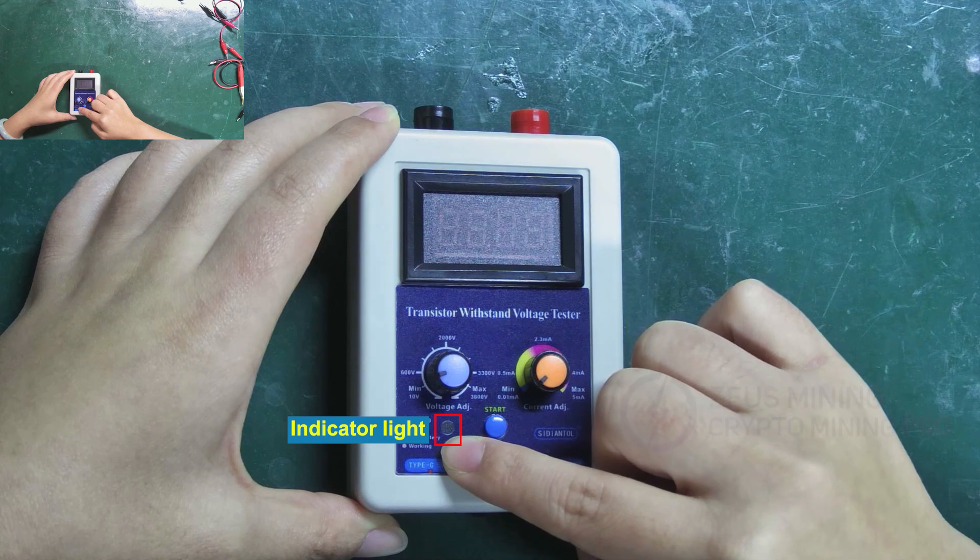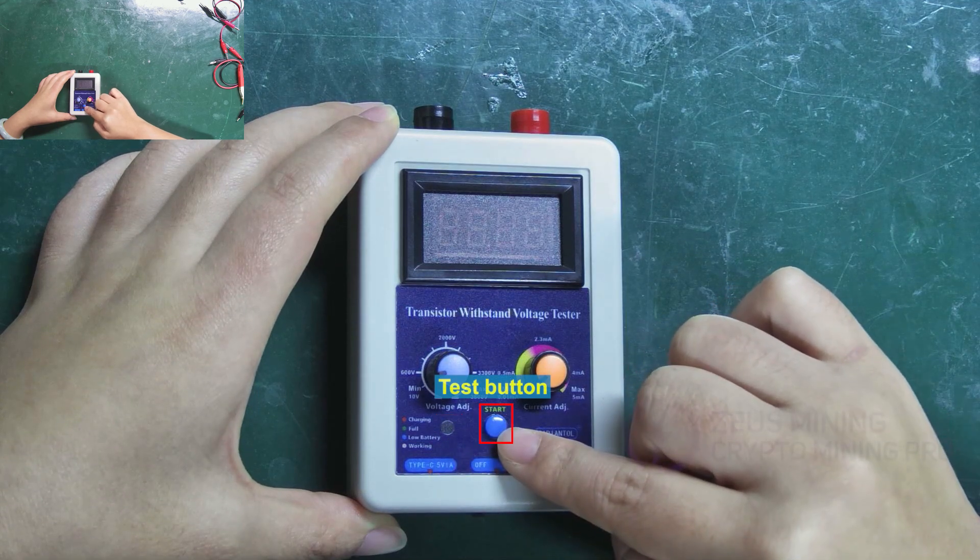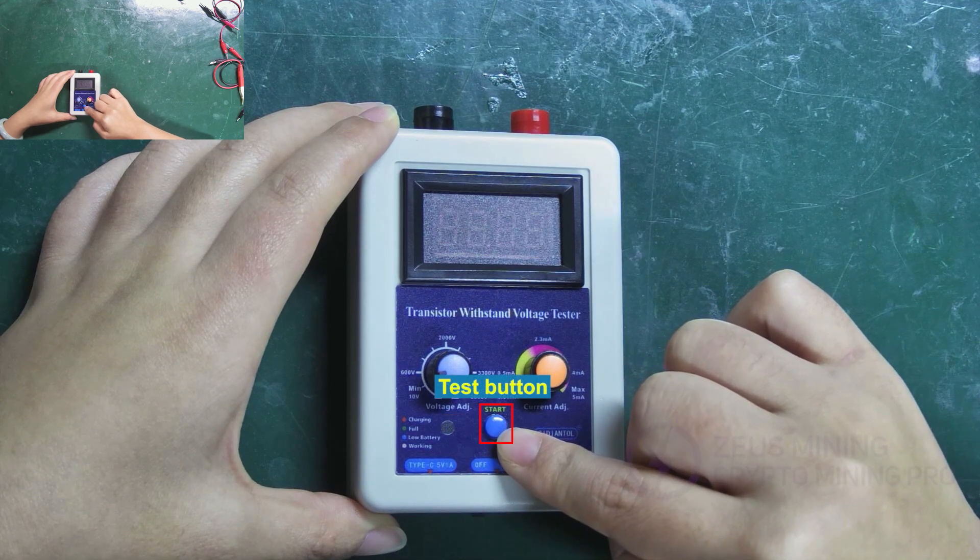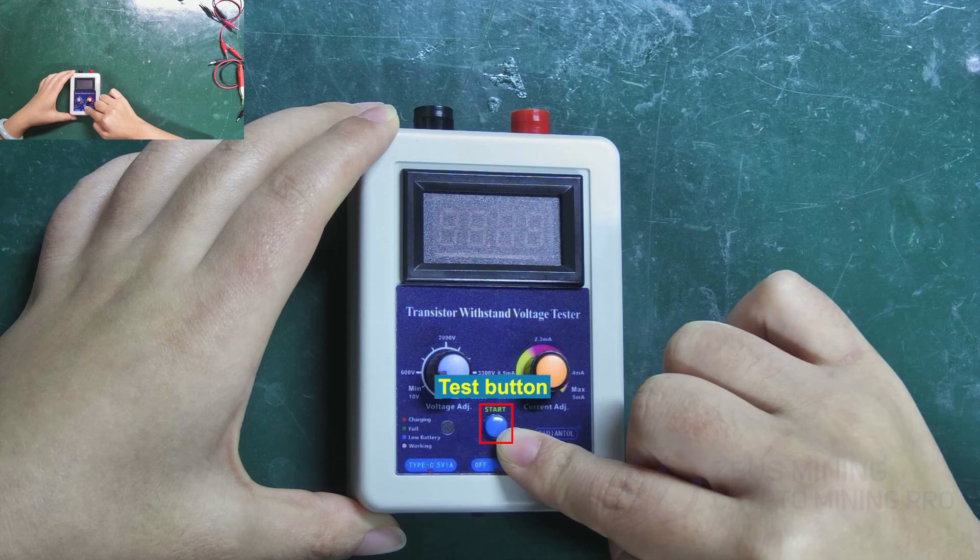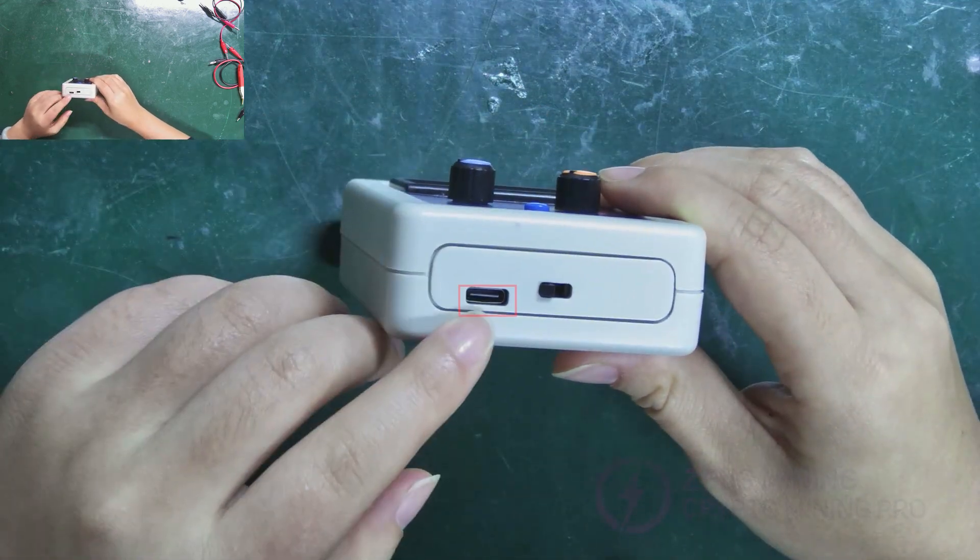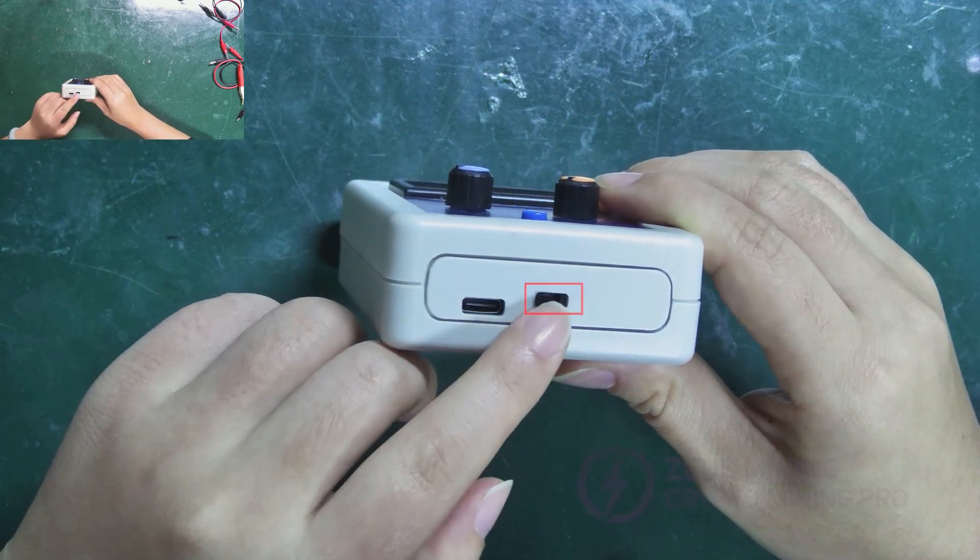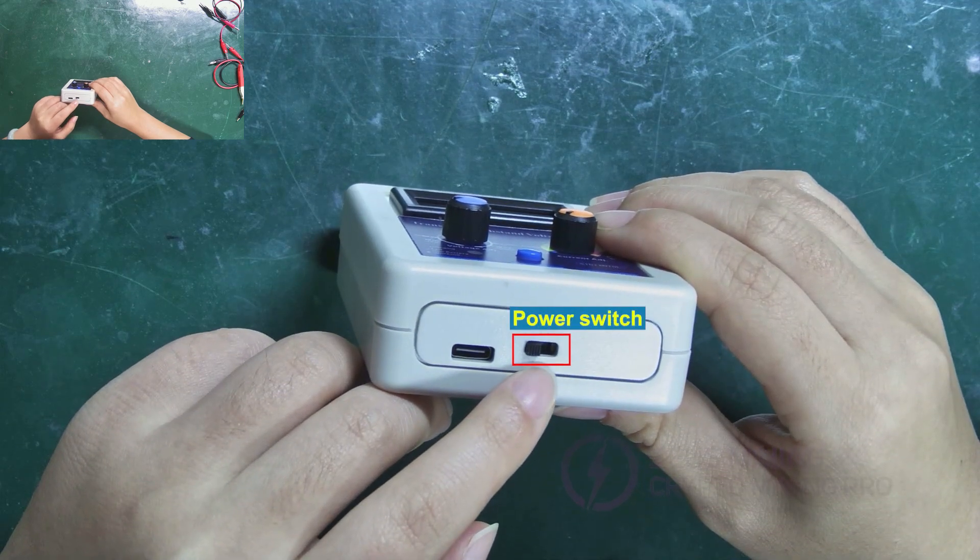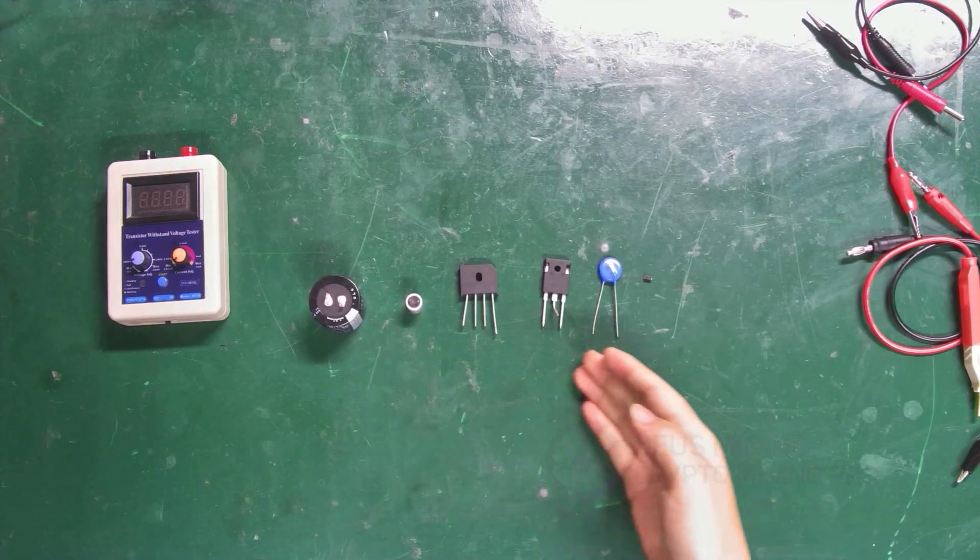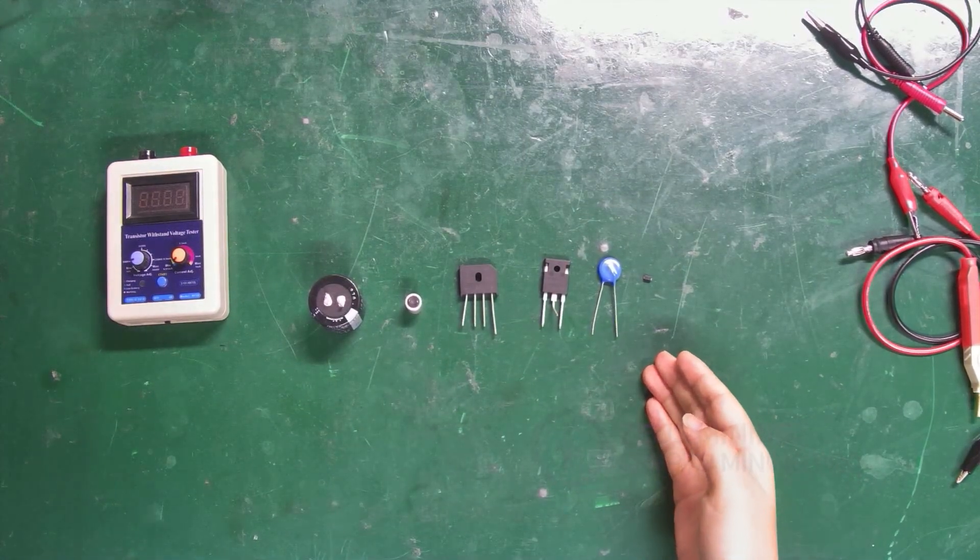This is the indicator light. This one is the test button. Press and hold to start the measurement and release to end. Here's the charging port, and the other one is the power switch.